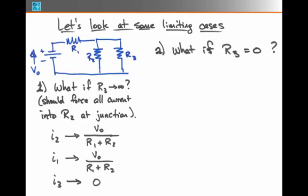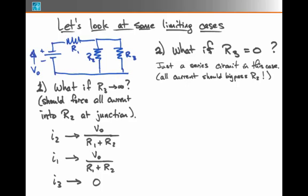Another limiting case would happen if R3 was zero. That's like a shorted out wire across R2. That means that most of the current should not pass through R2 at all. It should pass through R3 altogether. In other words, the battery which was connected to the three resistors will look like it's only connected to two. The two resistors being R1 and R3. It's just a series circuit in this case.